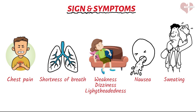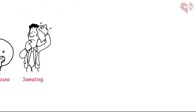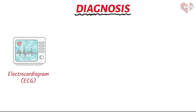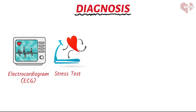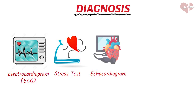If you are experiencing symptoms of coronary artery disease, or if you are at risk due to your age, family history, or lifestyle factors, your healthcare provider may recommend tests to diagnose the condition. One of the most common tests is an electrocardiogram or ECG, a non-invasive test that measures the electrical activity of the heart and can help detect abnormalities such as an irregular heartbeat or damage to the heart muscle. A stress test involves exercising on a treadmill or stationary bike while being monitored by healthcare professionals to evaluate the heart's response to physical activity. An echocardiogram is a type of ultrasound that uses sound waves to create images of the heart and can help detect abnormalities in its structure or function.